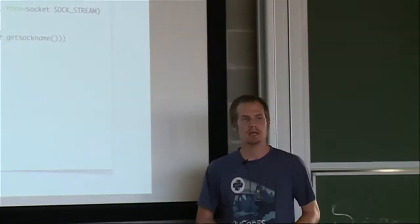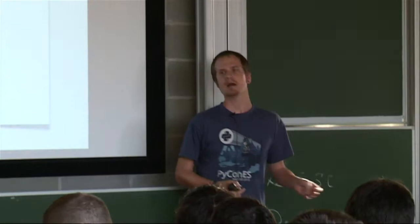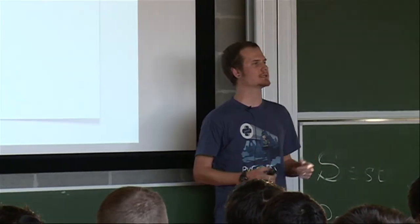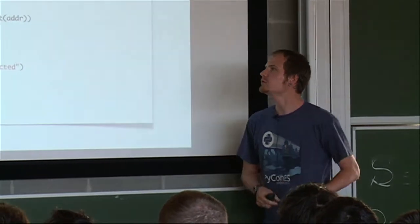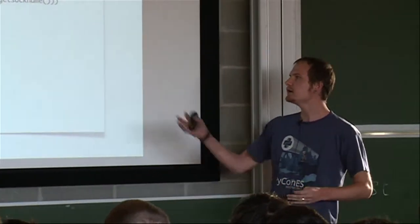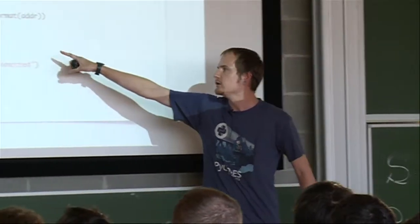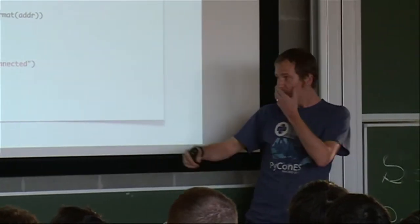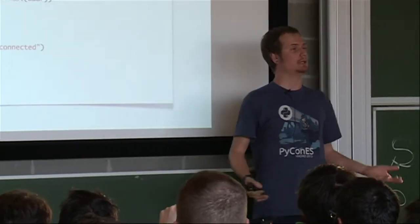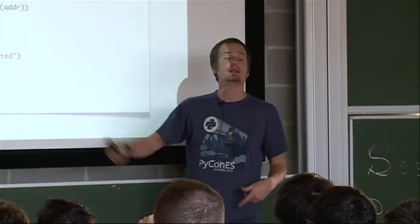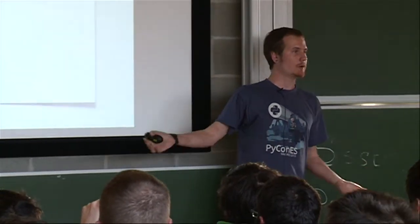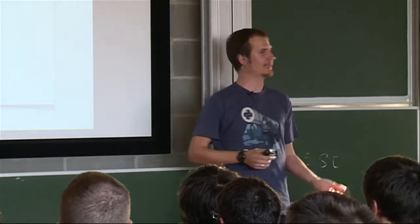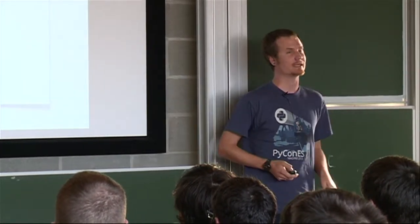So let's say we start doing our Sockets 101 example, an echo server that handles a single client. We just create a server socket, we bind to an address, we're listening there. And when we get a single connection, we read some data there. When there's no data, it means that the client disconnected. And then we just send the data again, so that's an echo server. Now, the problem with this approach is basically that we can only handle one client, which is kind of not very web-scale.